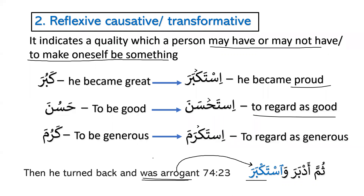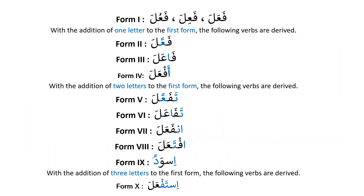So we have two main characteristics of Form 10: number one, seeking something; and number two, posing or pretending to be something that in reality you are not, or you may have that quality or you may not — or you make yourself into something which in reality you are not. Alhamdulillah, our chart is now complete from Form 1 to Form 10.